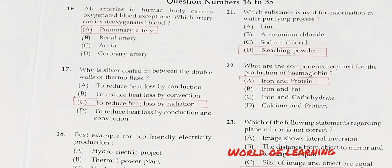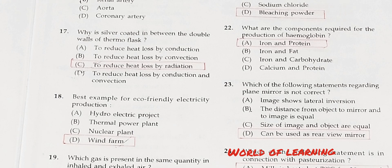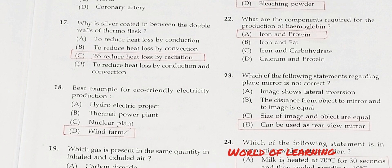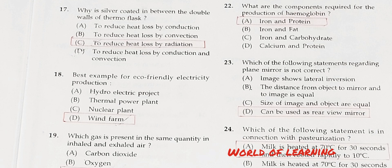Question 17: Why is silver coated in between the double walls of a thermoflask? Option A: To reduce heat loss by conduction. Option B: To reduce heat loss by convection. Option C: To reduce heat loss by radiation. Option D: To reduce heat loss by conduction and convection. Correct answer is Option C, to reduce heat loss by radiation.